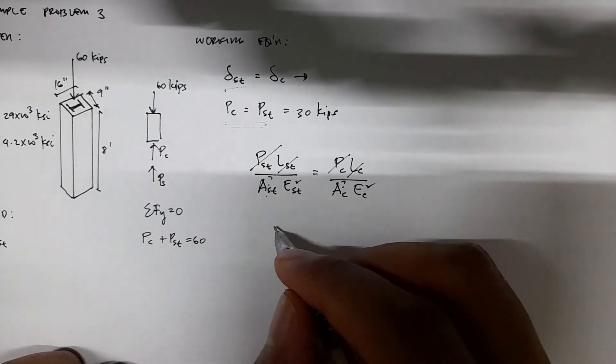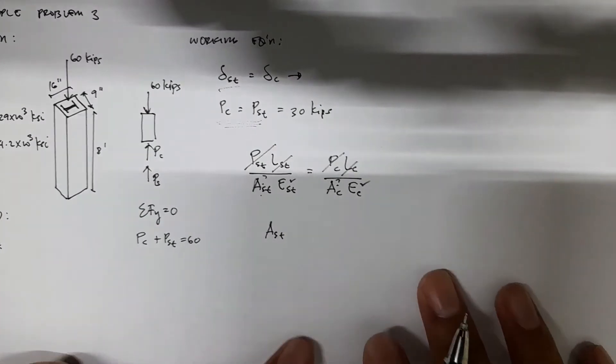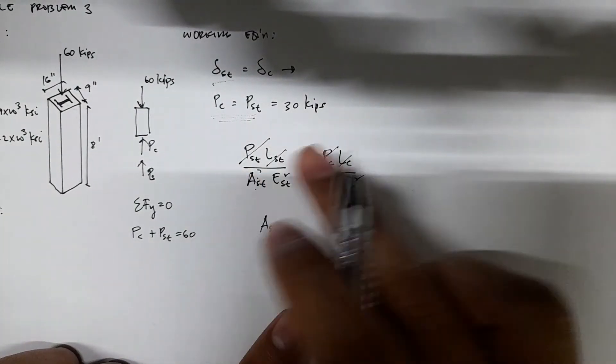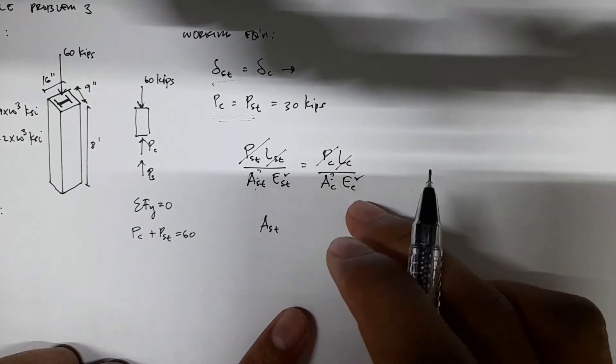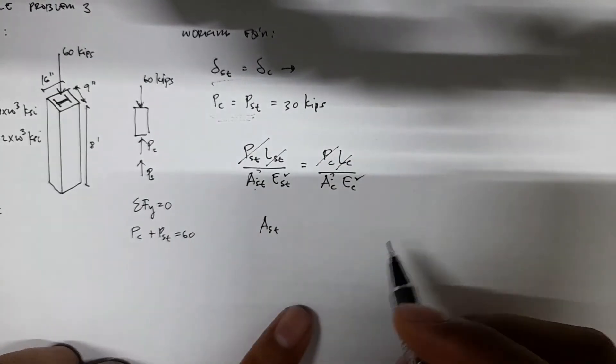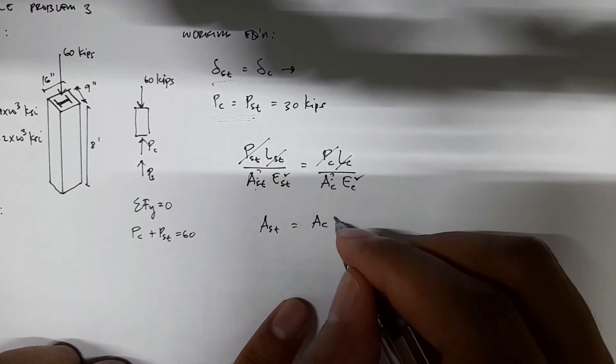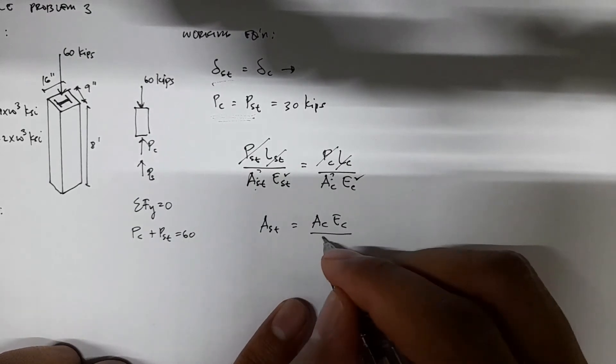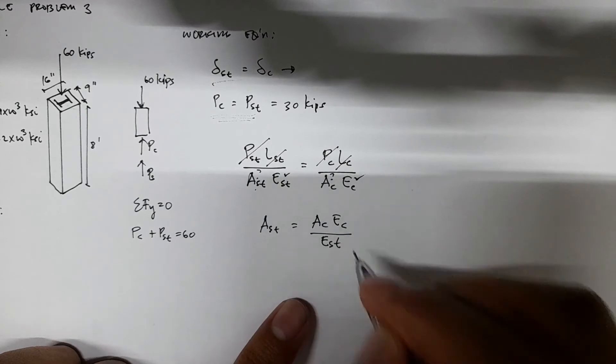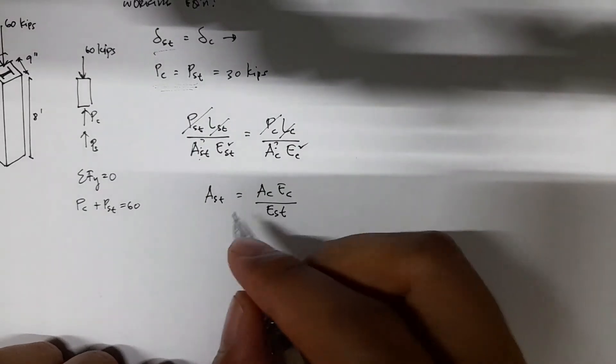We have Ast - we will transfer this to the other side and transfer the other two to the numerator. So you have Ast equals Ac × Ec over Est.